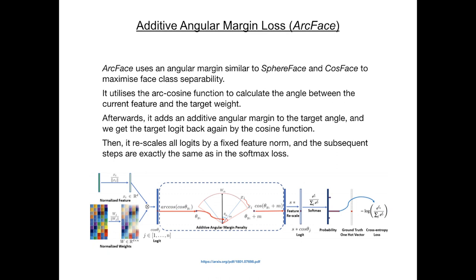ArcFace further improves the discriminative power achieved by SphereFace and CosFace by applying an additive angular margin loss. Unlike CosFace, which applies an angular margin directly to the target logit, ArcFace applies it to the inverse of the angle using the ArcCos function before using the cosine function to get back the target logit. It then rescales the logits by a fixed feature norm, and the rest is the same as the Softmax loss function.